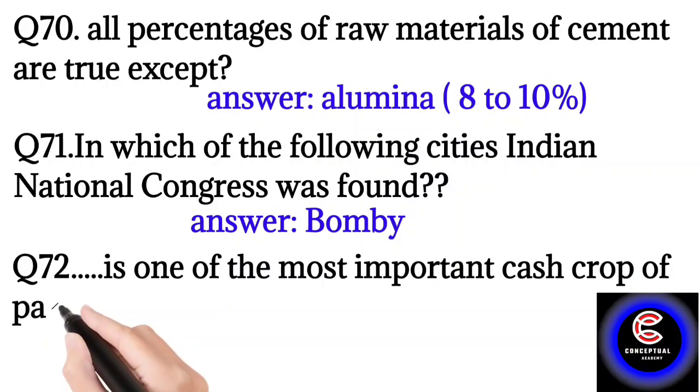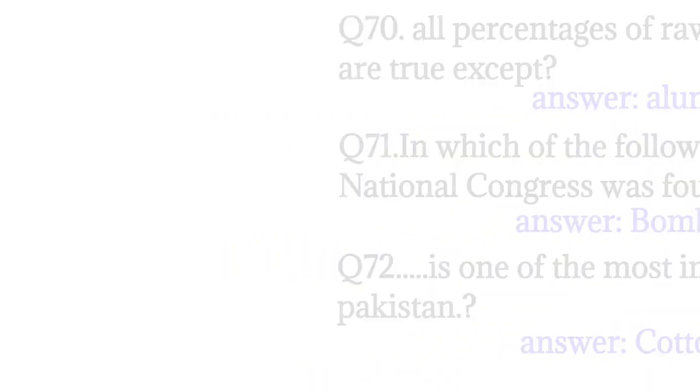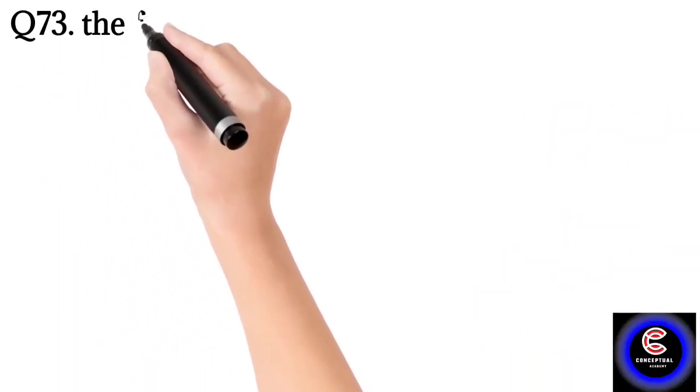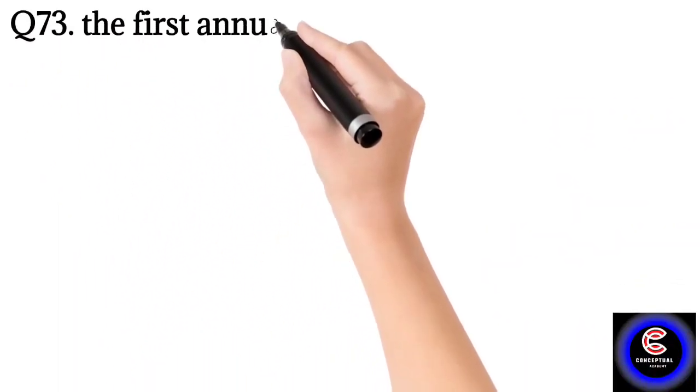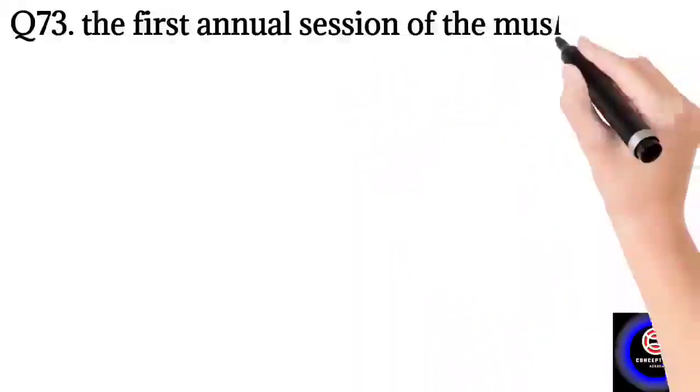Question number 72 is one of the most important state cop stands under principia. Question number 73: The first annual session of the Muslim League was held over? So the answer is 1930.